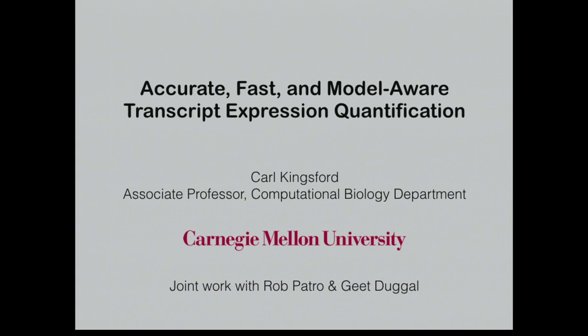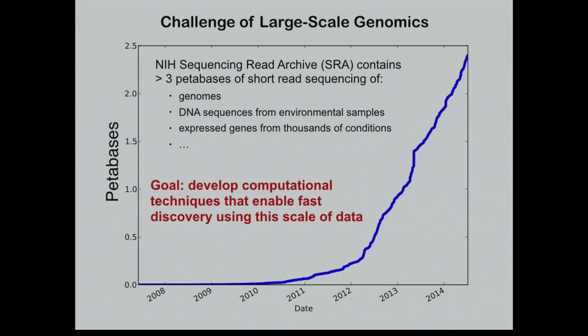We all know that the amount of genomic data available is huge and increasing really rapidly. Looking at one public database, the NIH Sequencing Read Archive, it has over three petabases of publicly available sequencing data, comprising short read sequence experiments from whole genome sequencing efforts, metagenomic sequencing efforts, and over 150,000 gene expression experiments using RNA-seq.